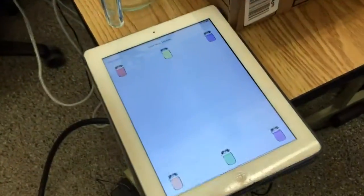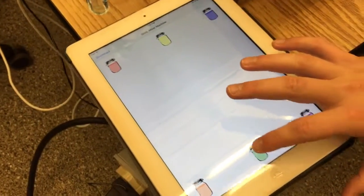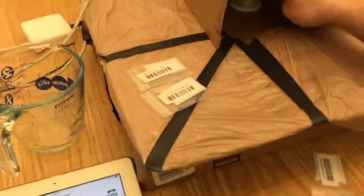We can select an option on the app, the green for example, and it'll start pouring.